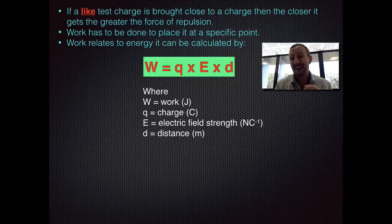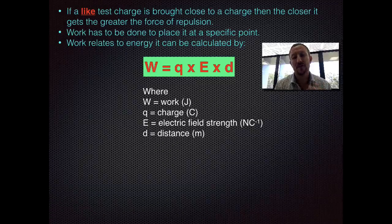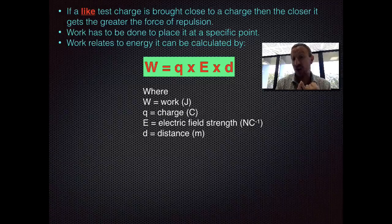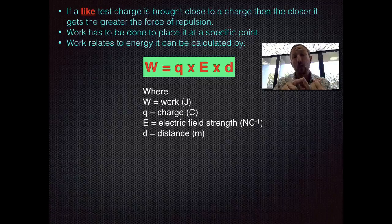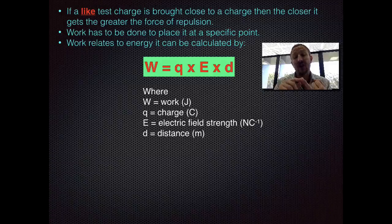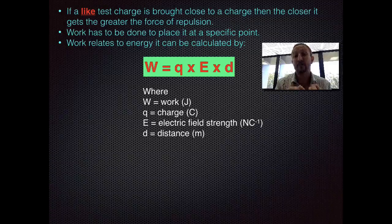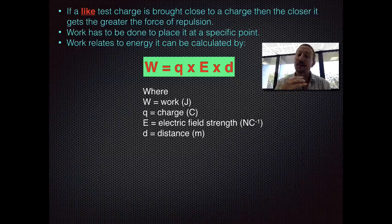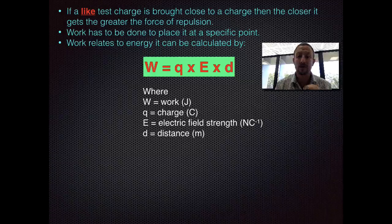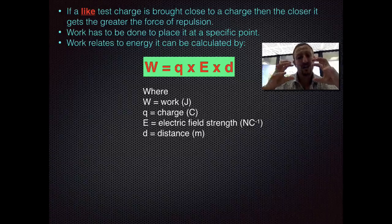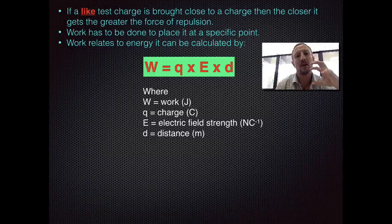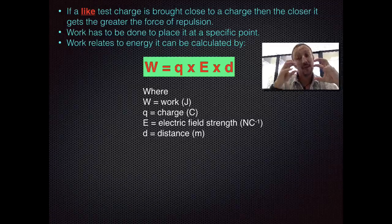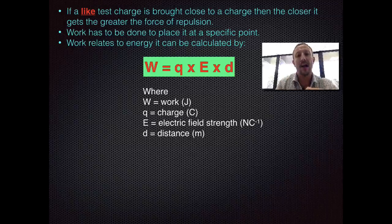Which means that when we're looking at gravity we can deal with MGH which is the gravitational potential energy. Well for work done in an electric field we can use a similar sort of algorithm where our mass is going to be the charge. Our force, what generates the force, is going to be instead of gravity we're going to have our electric field strength, and D is going to be the distance apart which is the H part of MGH. So from this the work that's done to push a charge close to another charge can be calculated using Q, the charge which is being used to push against the electric field strength and the distance apart they happen to be.